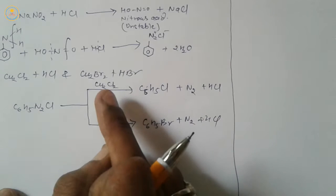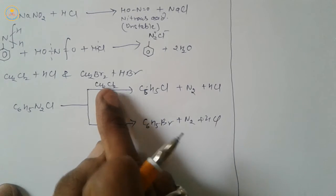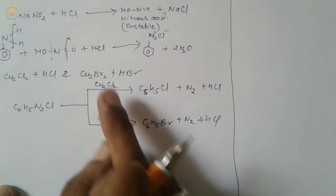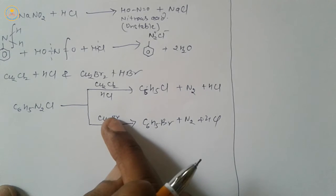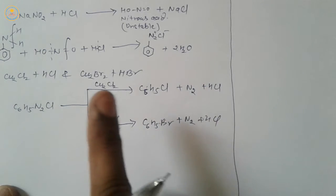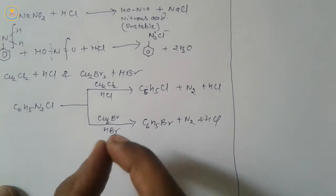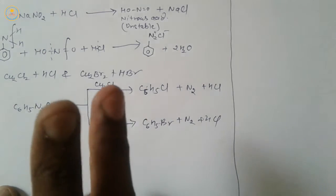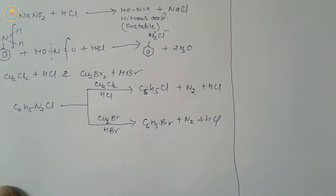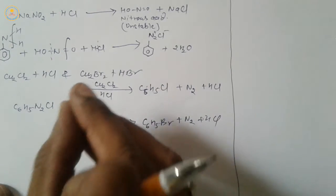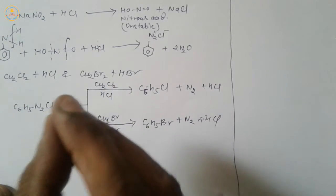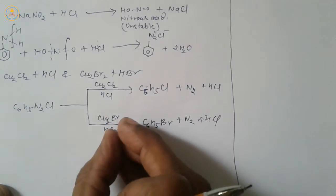When copper powder is used in place of cuprous halide, then the modified reaction is called the Gatterman reaction. Very, very important. Three name reactions are included here: diazotization, Sandmeyer reaction, and Gatterman reaction.